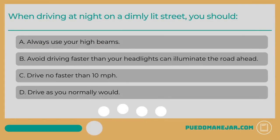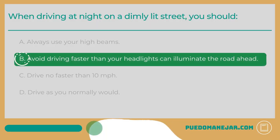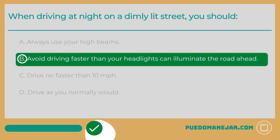When driving at night on a dimly lit street, you should: A: always use your high beams. B: avoid driving faster than your headlights can illuminate the road ahead. C: drive no faster than 10 miles per hour. D: drive as you normally would. The answer is B: avoid driving faster than your headlights can illuminate the road ahead.